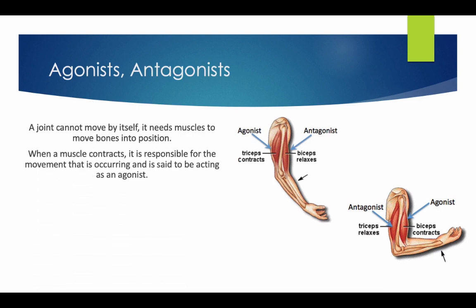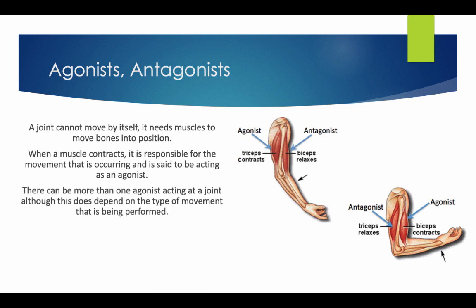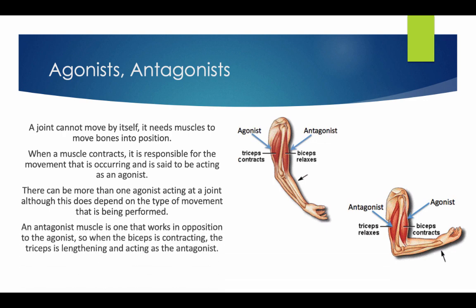When a muscle contracts, it is responsible for the movement that is occurring, and it is said to be acting as the agonist. There can be more than one agonist acting at a joint, although this does depend on the type of movement that is being performed.